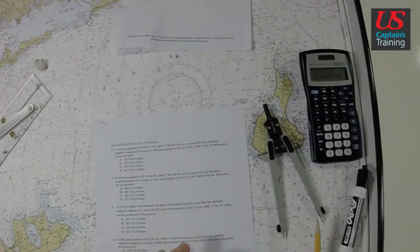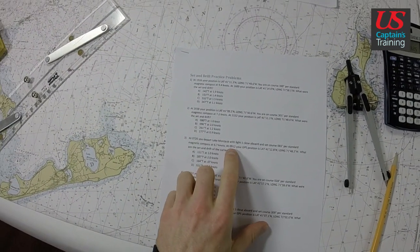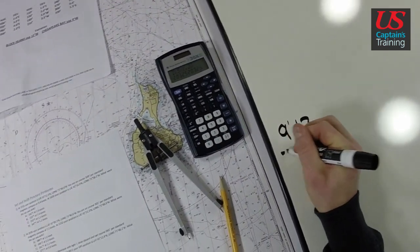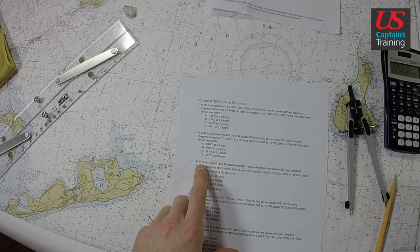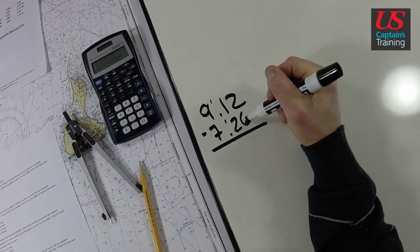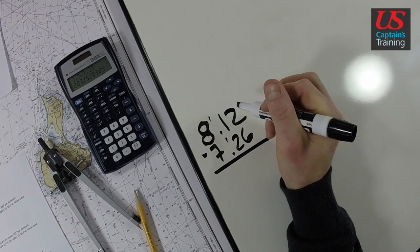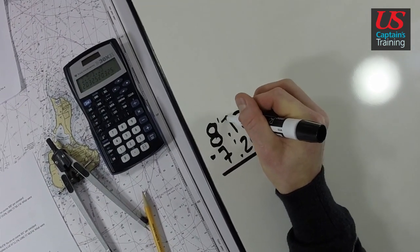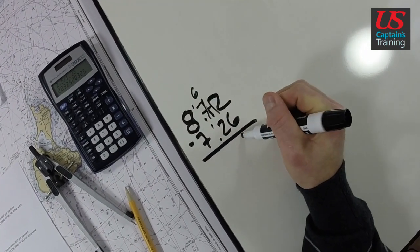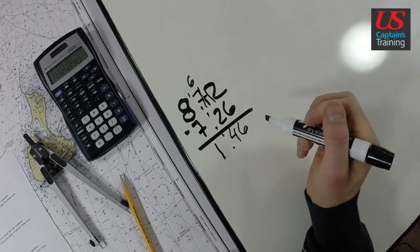Alright so let's lay this out on the whiteboard and do our math. We know we're going to need a time. So we take our end time 0912 minus our start time 0726. You can't take 26 from 12, so we borrow from the hour. One hour is 60 minutes, 60 plus 12 equals 72 minutes. Now we can borrow, 8 minus 7 is one hour 46 minutes.